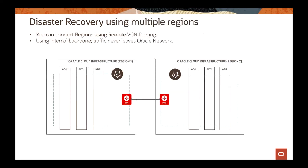When using multiple regions, the connectivity goes through what we call remote peering. You can do remote peering between regions to connect the network layer between them using Oracle's internal backbone — traffic never leaves the Oracle network. It's as simple as spinning up a DRG, connecting the two DRGs, putting your routes in place, and then you have two regions connected and can deploy resources across them.